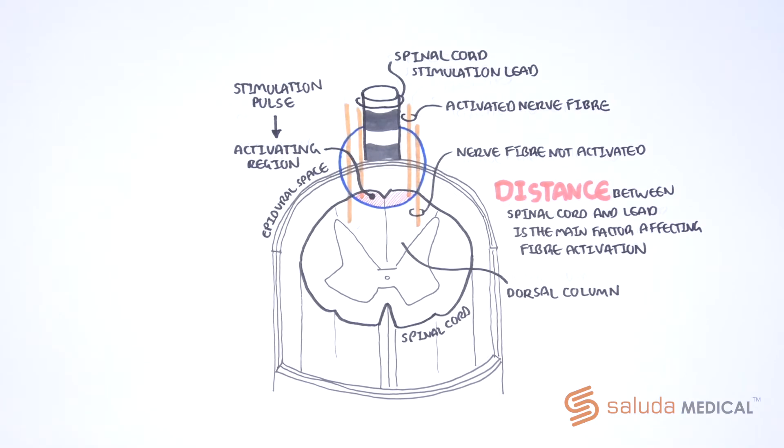When the cord moves closer or further away from the stimulating electrodes, the dorsal column fibers will move in and out of the activating region. So a fixed stimulation amplitude can at one time activate a large number of fibers and at another time elicit no response at all.